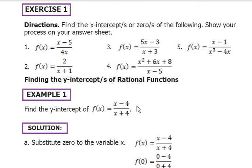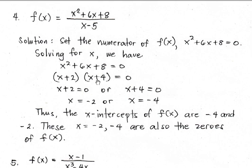Let me show you the original module. f(x) equals (x squared plus 6x plus 8) all over (x minus 5). We set the numerator to 0 — we have a quadratic function here, so we factor x squared plus 6x plus 8. The factors are (x plus 2) and (x plus 4). Solving for x, we find the x-intercepts of the function to be negative 2 and negative 4.